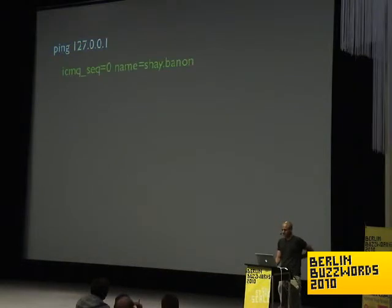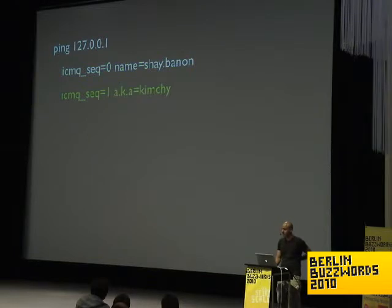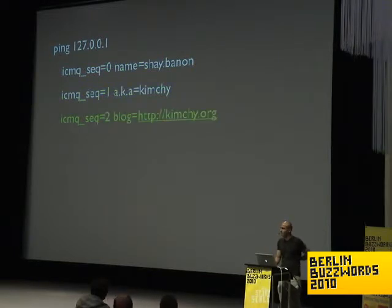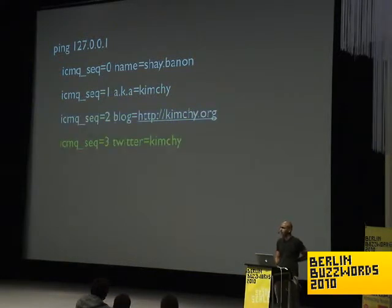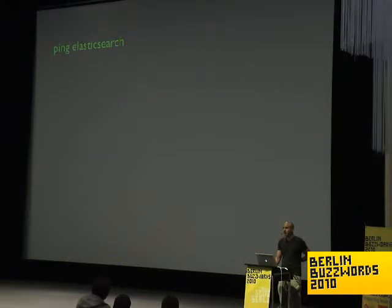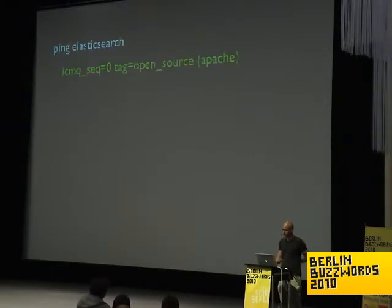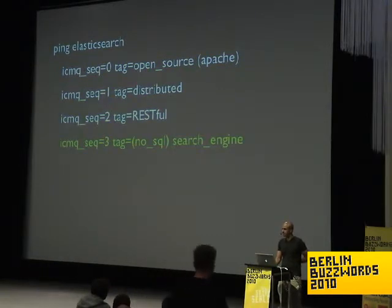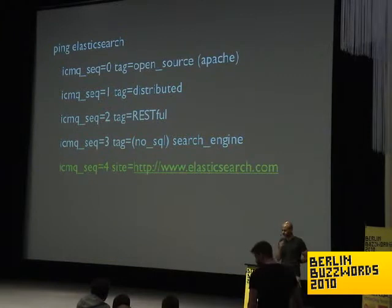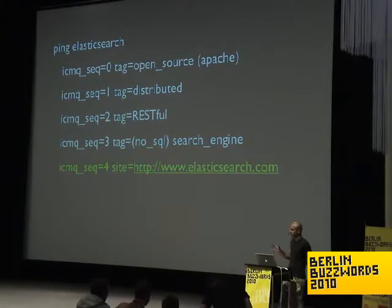My name is Shai Banon. I'm also known as kimchi, which is basically my username and all the other stuff, so I have a blog at kimchi.org and Twitter kimchi as well. Some information about Elasticsearch: it's open source under the Apache license, it's a distributed RESTful search engine, and the site is elasticsearch.com or .org.